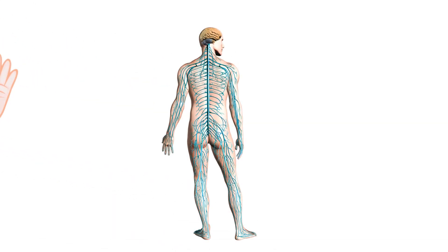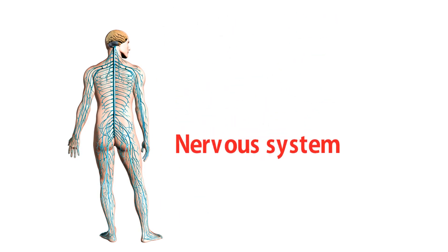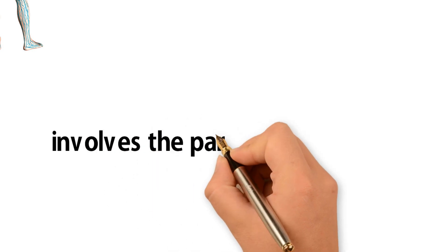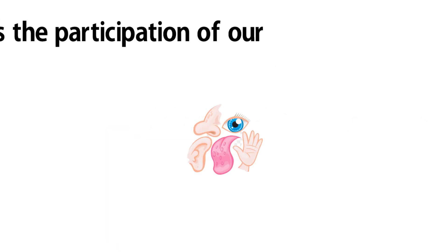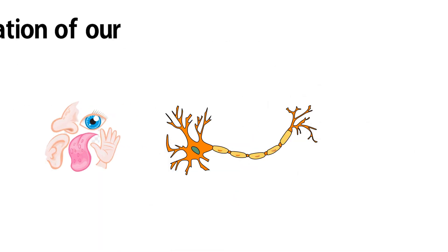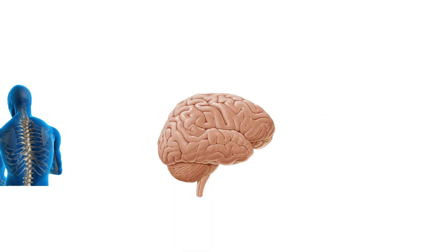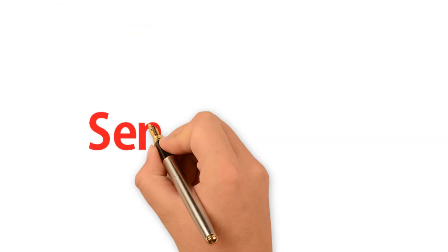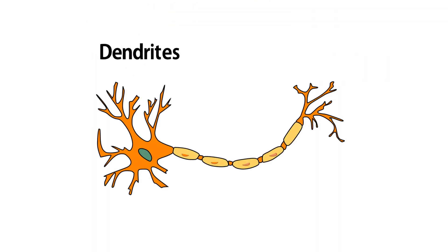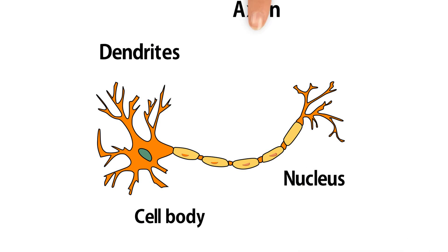Let us go into more detail on the neural system. Nervous coordination involves the participation of our sense organs, nerves, spinal cord, and brain. The changes around us are detected by our sense organs because they have neurons at their tips. Neurons consist of dendrites, cell body, nucleus, and axon.